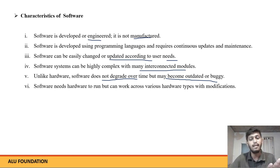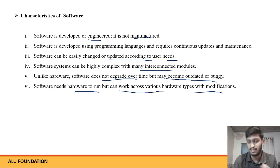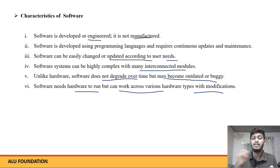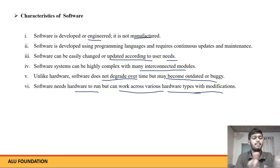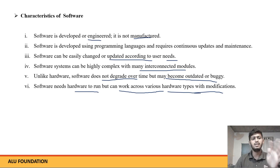Software does not degrade over time physically, but may become outdated or buggy. Software needs hardware to run but can work across various hardware types with modifications. These are the key characteristics of software.